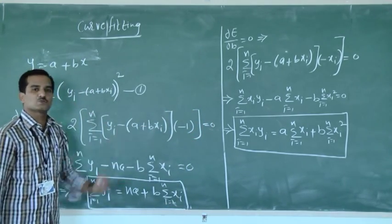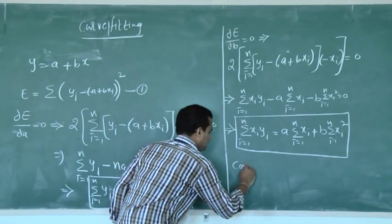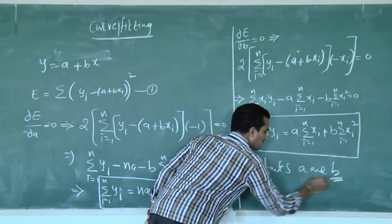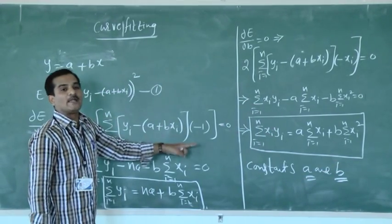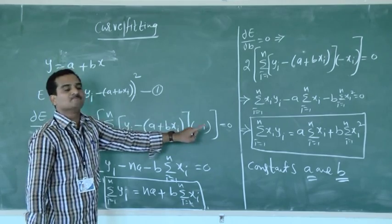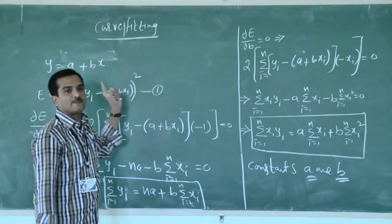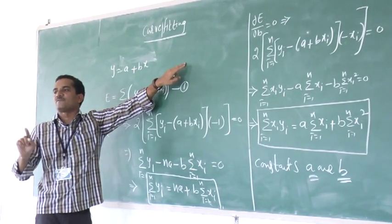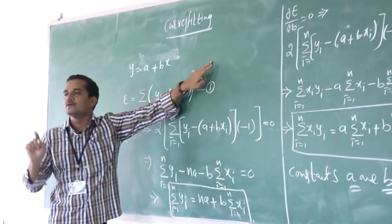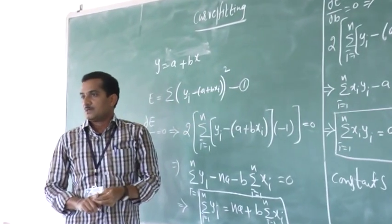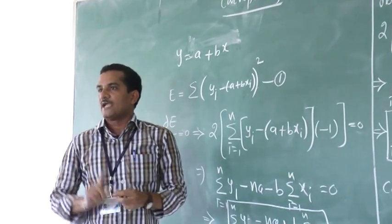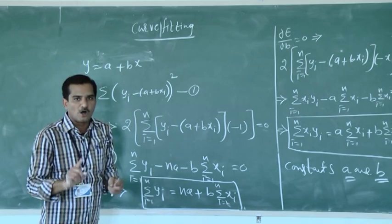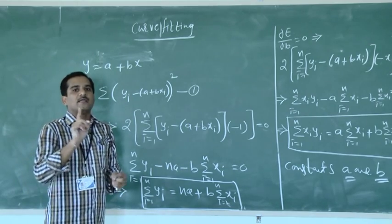By solving these two normal equations, we will get the constants A and B. Substituting these values into the line Y = A + BX is called the fitting of a straight line. The purpose of fitting a straight line is to calculate or predict future values. There are infinite variety of curves — exponential, second degree, power, parabola — but the straight line is the simplest and most important one.